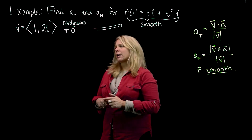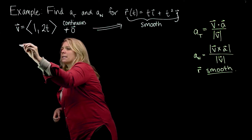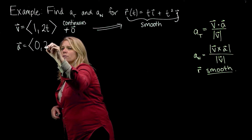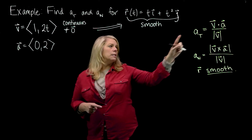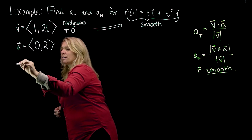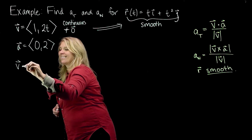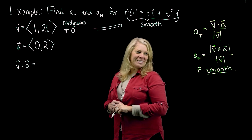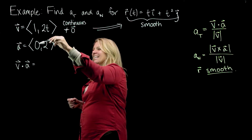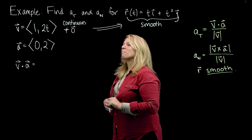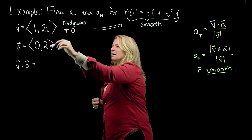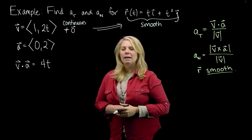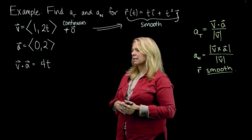I've got my velocity vector, so I'm going to go ahead and calculate my acceleration vector. That gives me zero and two. I need a dot product of those two vectors. One times zero is zero, plus 2t times 2 gives me 4t. At this point you shouldn't necessarily need to write out more steps for that.